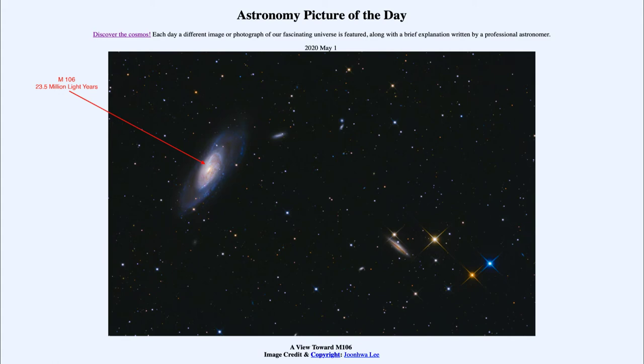For example, the other galaxy noted here out towards the right known as NGC 4217 is about 60 million light years away, more than twice as far away as M106 on the other side of the image.